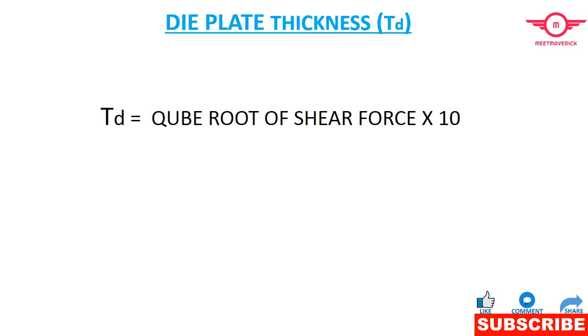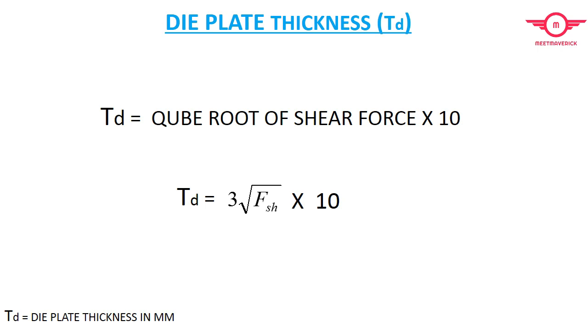Now we need to calculate the die plate thickness. It is very important because from the die plate thickness we need to calculate all other calculations. It is denoted as Td. Td is equal to the cube root of shear force times 10.